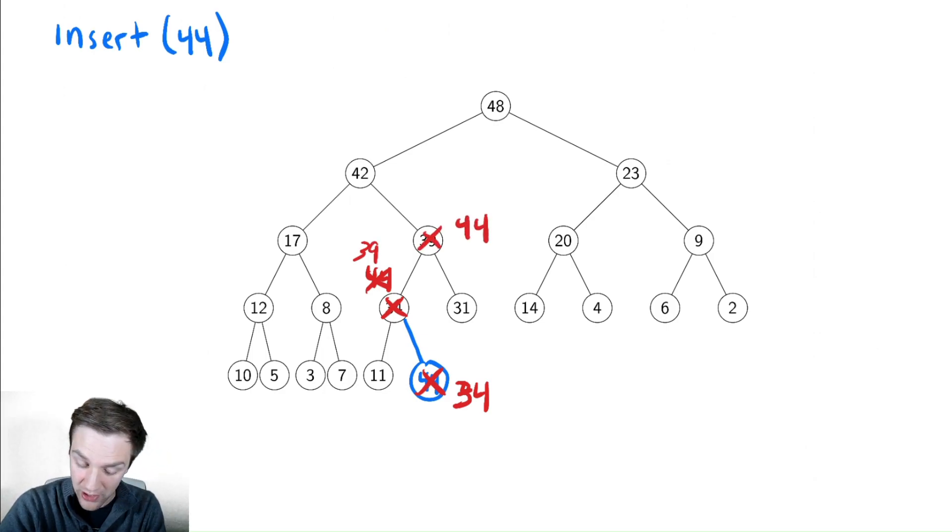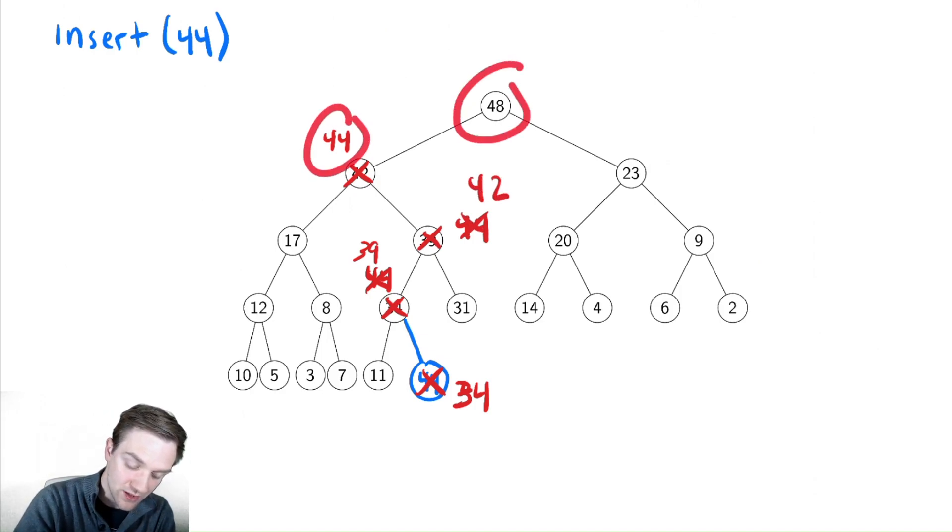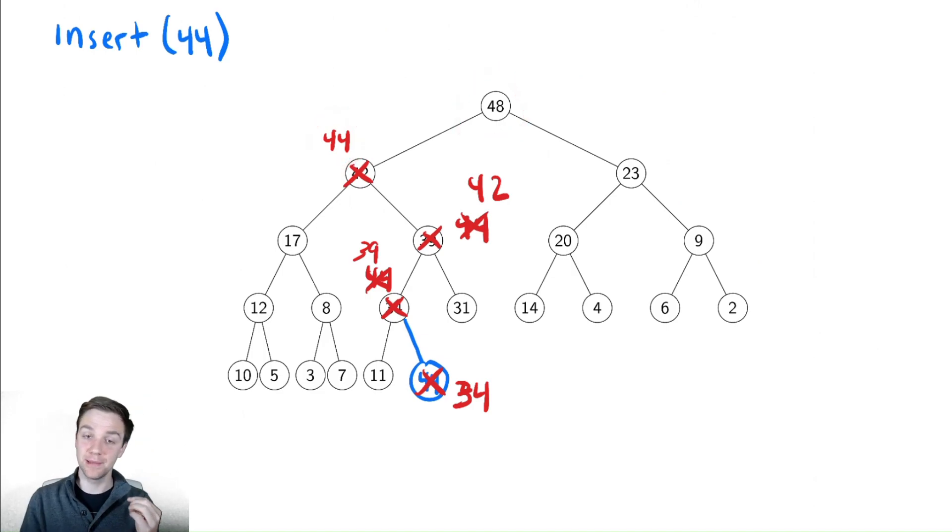Are we violating our heap property? Yes, we are, because 44 is greater than 42. So we perform another swap and put 44 up there. Are we violating our heap property? Not anymore because 44 is smaller than 48. So we have now completed our fixing of the heap in order to perform this insertion.